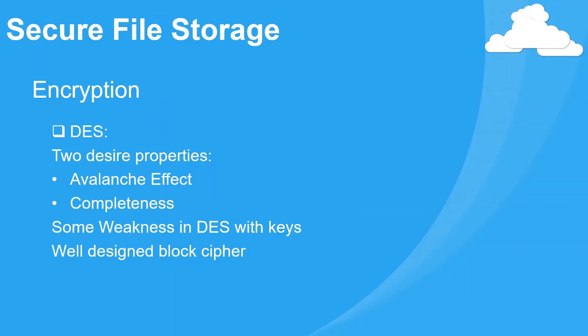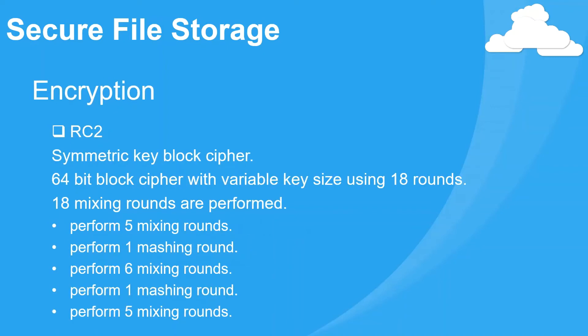The second property is completeness — each bit of cipher text depends on many bits of plain text. Regarding weaknesses: cryptanalysts have found some weaknesses in DES when weak keys are selected; these keys shall be avoided. DES has proven to be a very well-designed block cipher, and there have been no significant cryptanalytic attacks on DES other than exhaustive key search.